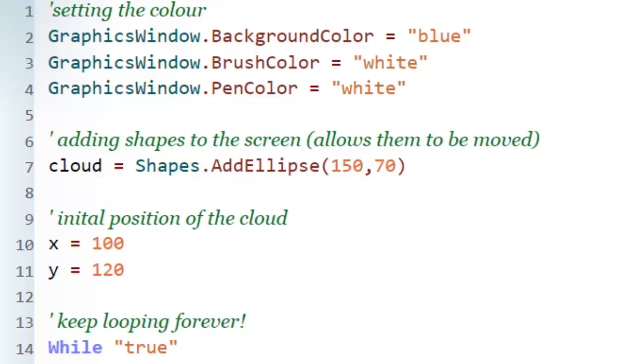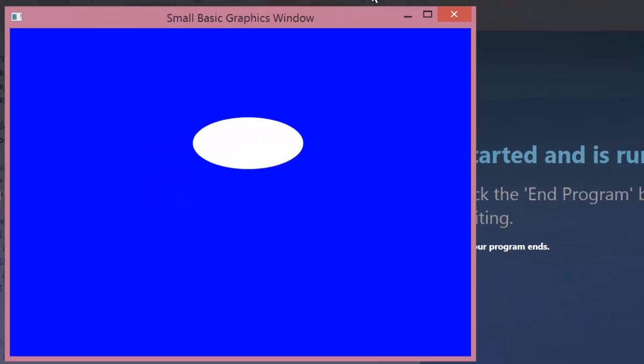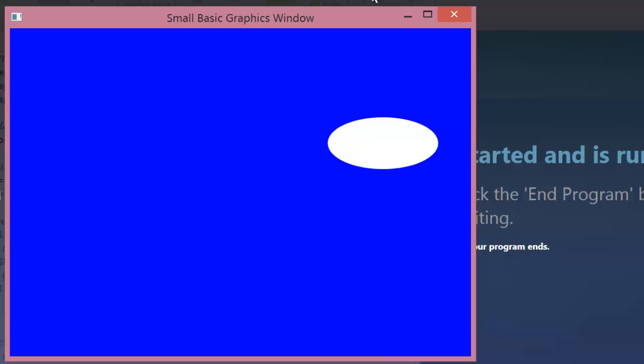The code in this task has been set up to do some basic animation. I'm going to run the program so you can see what it looks like. A cloud will move across the screen, going from left to right.